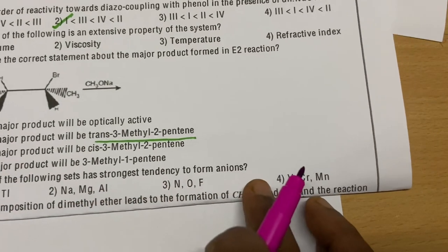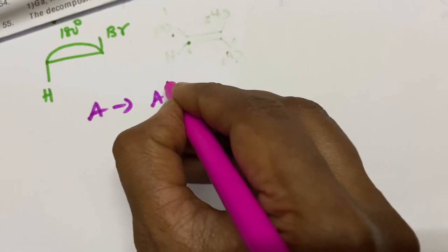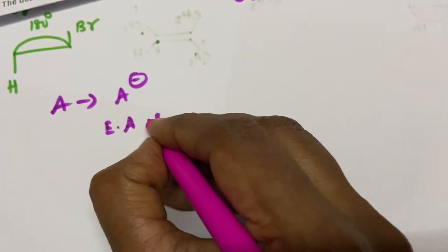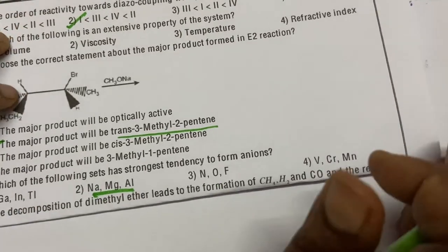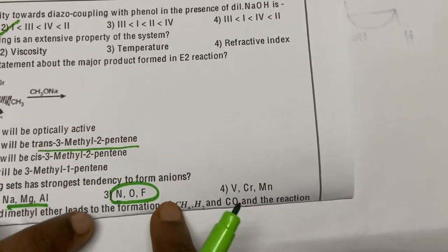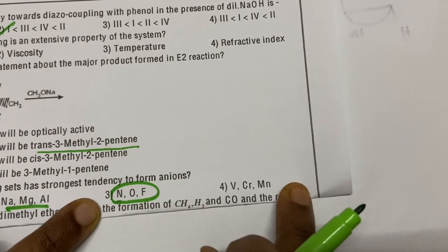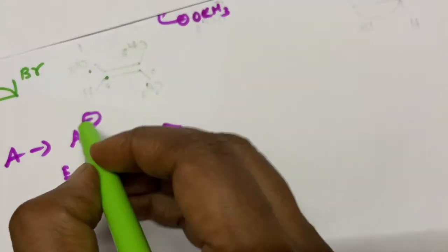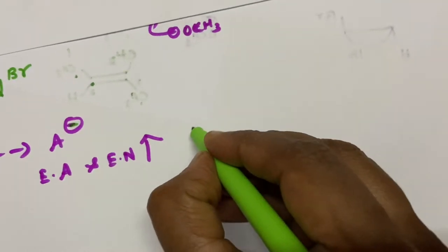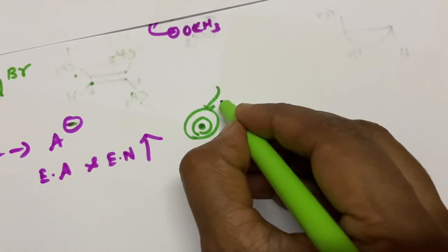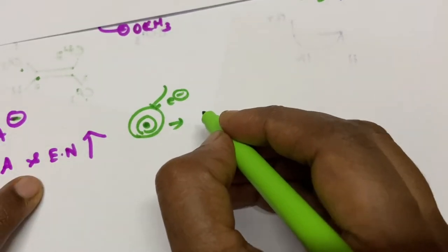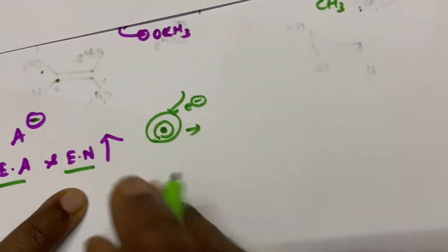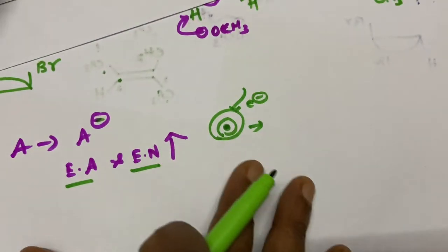Ninth question: Which set has the stronger tendency to form anions? To form anions, an atom must have high electron affinity and high electronegativity. These must be more for a smaller atom — the size must be small for the electron cloud to attract an extra electron. Nitrogen, oxygen, and fluorine have higher electron affinity due to their smallest size and better electronegativity. So that is the answer — these elements best accept extra electrons to form anions.